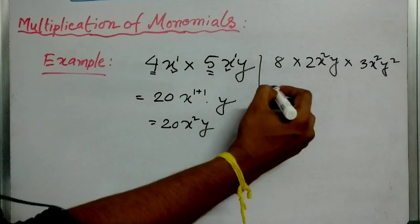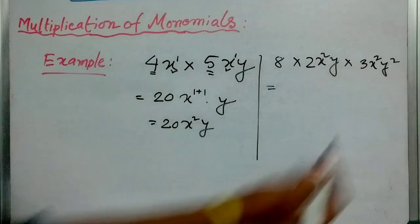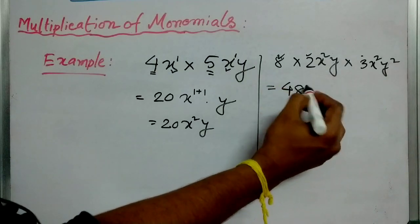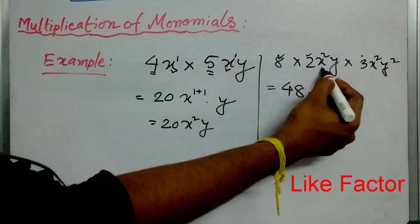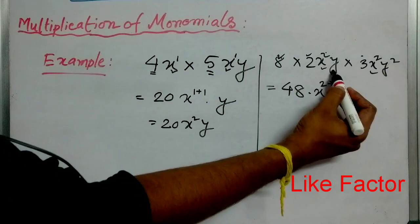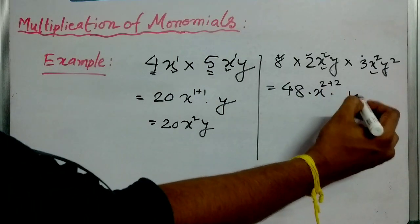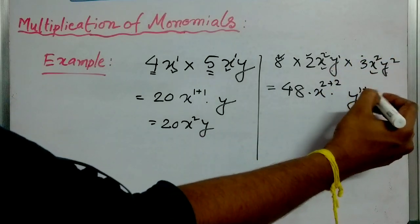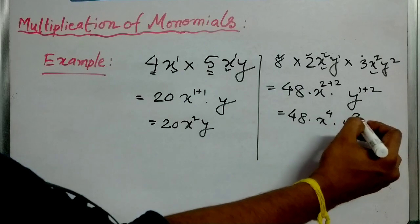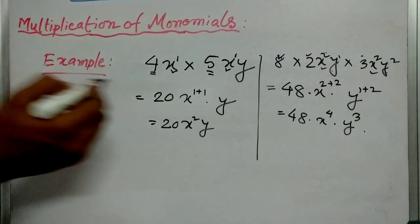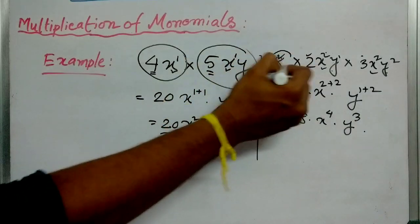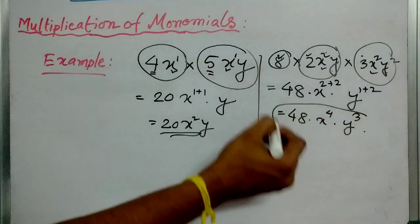Let's go for another example: 8 into 2x squared y, into 3x squared y squared. First the constant terms are multiplied: 8 into 2 is 16, and 16 into 3 is 48. The like term x appears with power 2 and power 2, so 2 plus 2 gives x to the power 4. Then y appears with power 1 and power 2, so 1 plus 2 gives y to the power 3. The answer is 48x to the power 4 y to the power 3. So these three monomials multiplied together give a monomial.